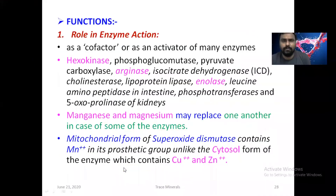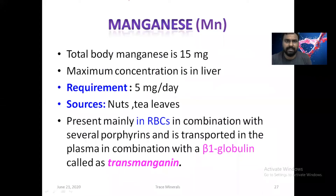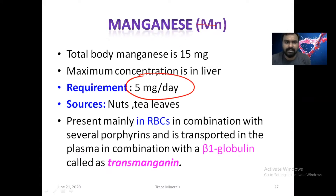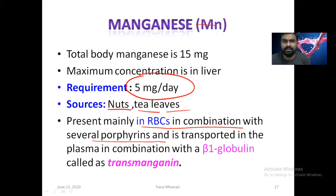If you are new to my channel, please subscribe. So now I am going to share my screen. We start with Manganese. Total body Manganese is around 15 mg. Maximum concentration is in the liver. Daily requirement is around 5 mg per day and sources are nuts, tea and leaves. It is present mainly in the RBCs in combination with several porphyrins and it is transported in the plasma in combination with beta-1 globulin.